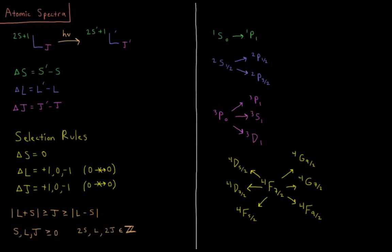This video will discuss atomic spectra and the selection rules for transitions between different electronic states with different term symbols. We'll start by saying we have some initial term symbol, 2s plus 1 lj. We hit that atom with some photon of light of energy h nu. It absorbs the photon, goes to some new state, 2s prime plus 1 l prime j prime.